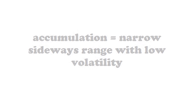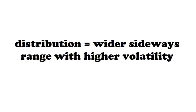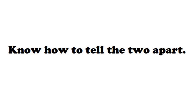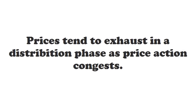You also have a more volatile, wider range — that's called distribution, often also called congestion. Understanding which is which is very important. Don't be lazy about this distinction, because in congestion — the wider, more volatile range that we call the distribution phase — prices tend to exhaust at the ceiling and floor of the range.